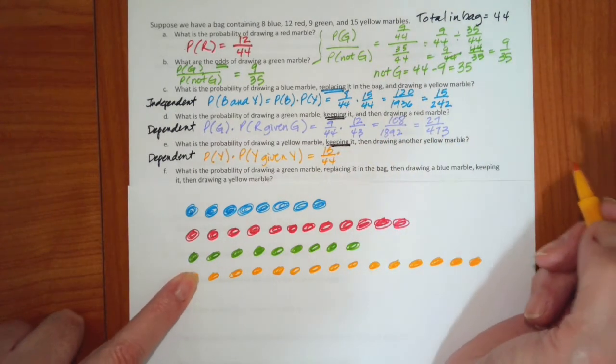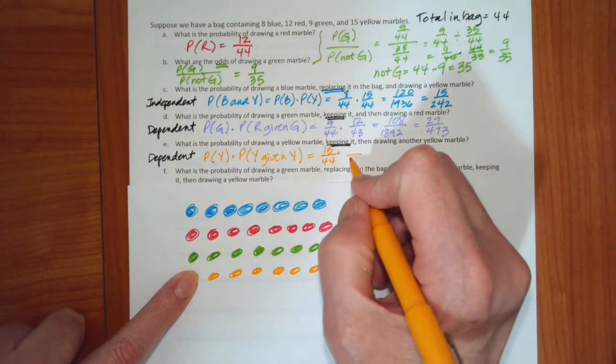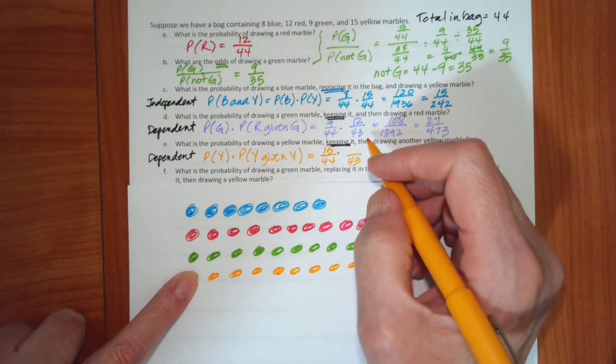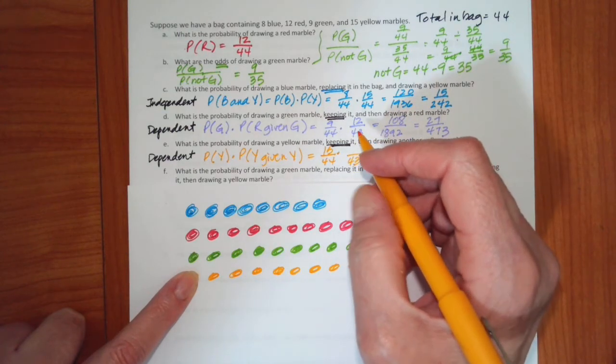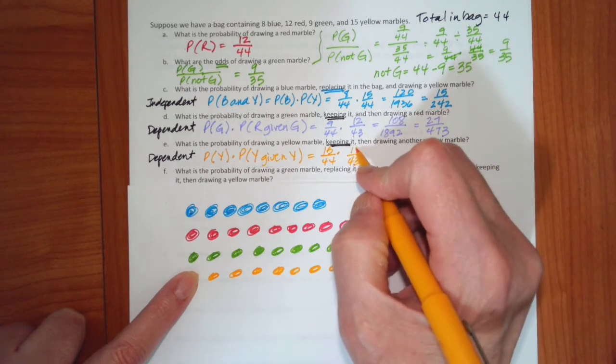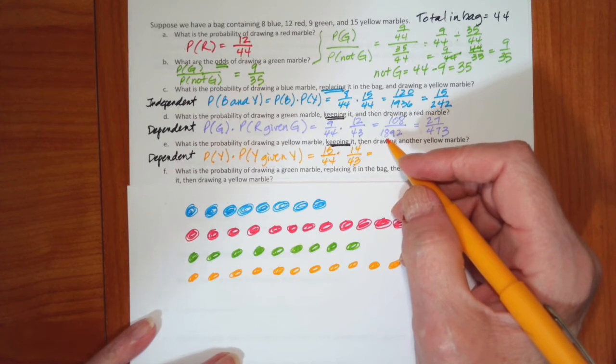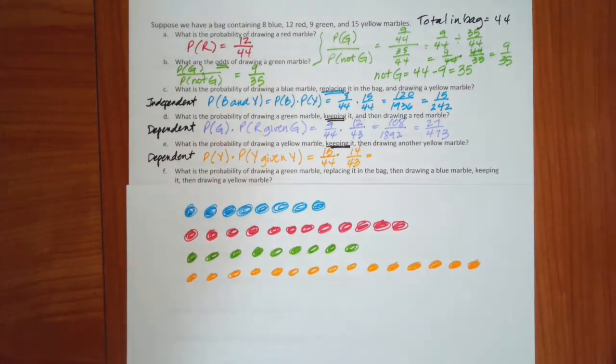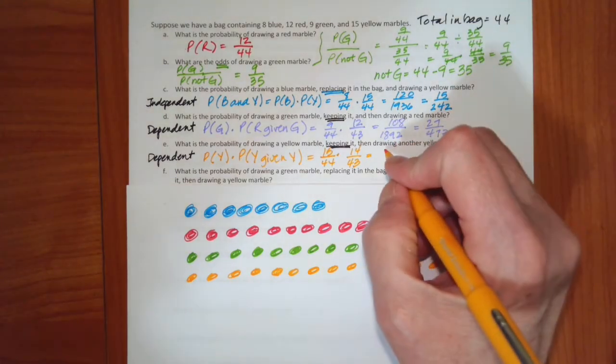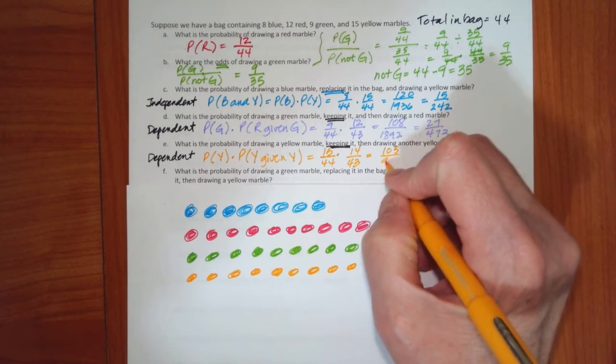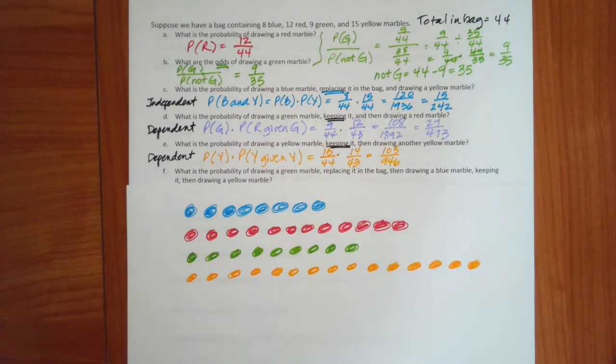But with one of them gone, I now only have 43 marbles, and I only have 14 yellow. So again, when I do the multiplication on that, the reduced form is 105 out of 946... 1046. And that's the reduced form.